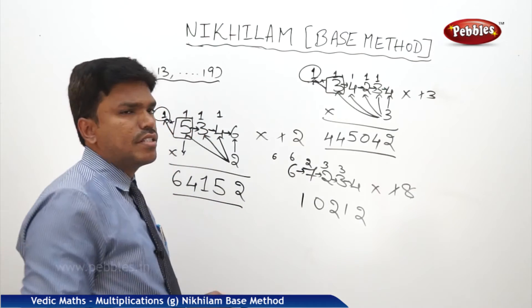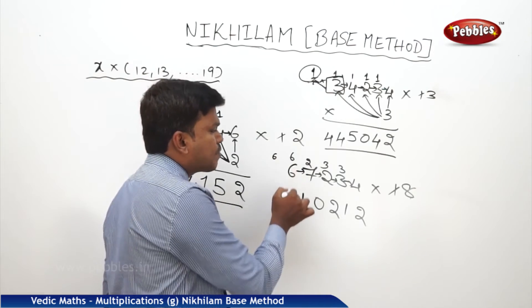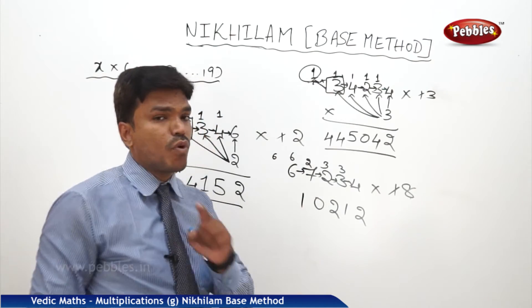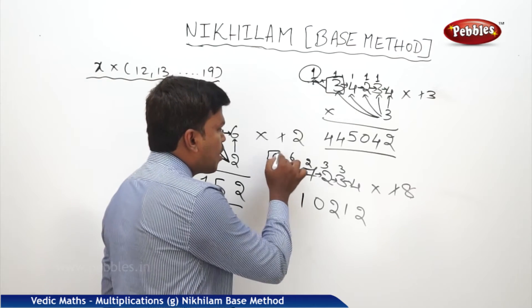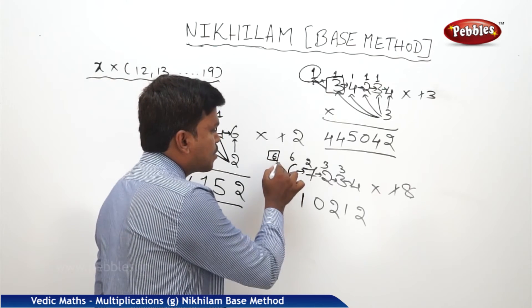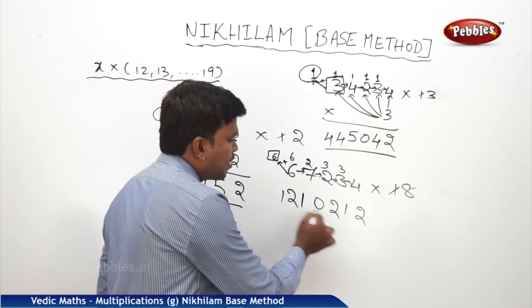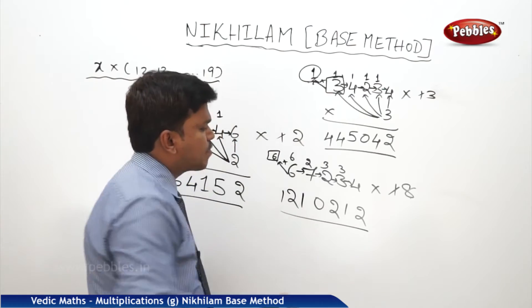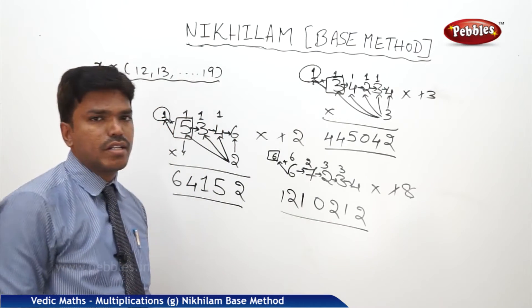Last step: simply drop 6 as it is, but there is a carry of 6. So 6 plus 6 is 12. So the answer is 1210212.